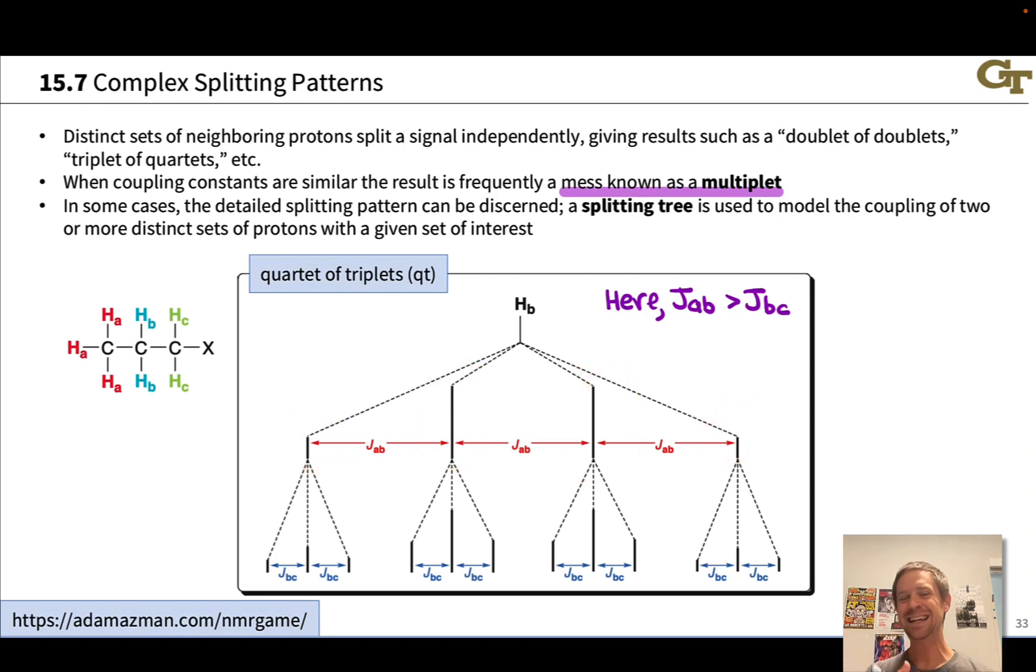Within each peak, within each quartet peak, we'll also see splitting due to HC. The two HC protons split each of the quartet peaks into a triplet. We end up with a situation where the overall signal looks like a quartet of triplets. A quartet from the three methyl protons, three plus one is four, and a triplet from the two methylene protons HC, two plus one is three.